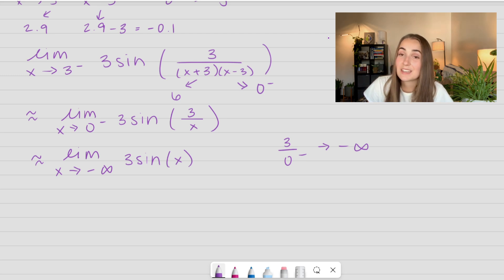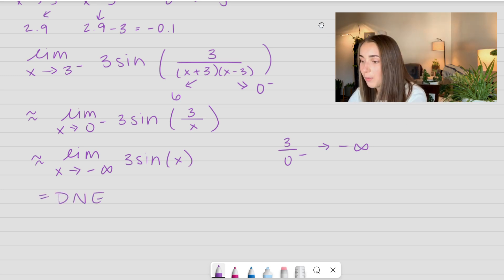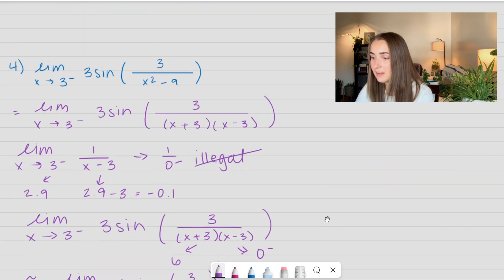So again, this is going to be an oscillating function because as x goes to negative infinity, sine of x is just oscillating between negative 1 and positive 1. And so I end up getting this entire limit does not exist. So if I go back up to my original limit, all I have to write out is that it does not exist.